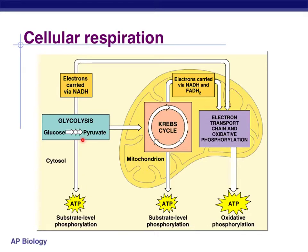Remember, glycolysis happens in the cytosol because it's an anaerobic process — no oxygen. Now, once we have pyruvate, depending on the environmental conditions of your body, which means if oxygen is present or if oxygen isn't present, one of two things happens. If there is oxygen, pyruvate is going to enter the mitochondria and go through oxidation of pyruvate, the Krebs cycle, and the electron transport chain.